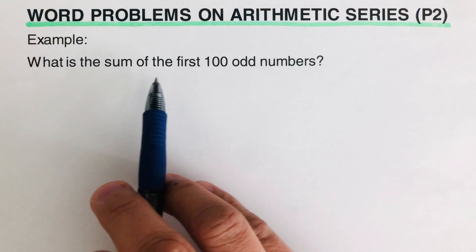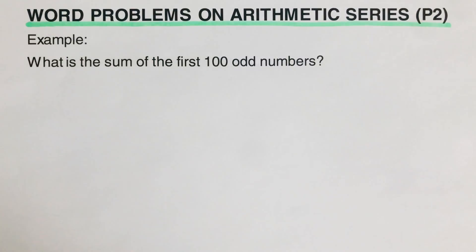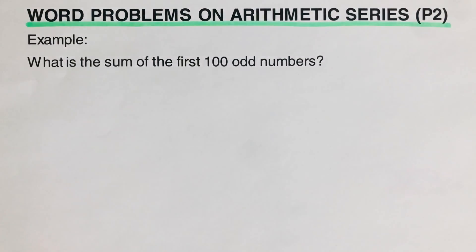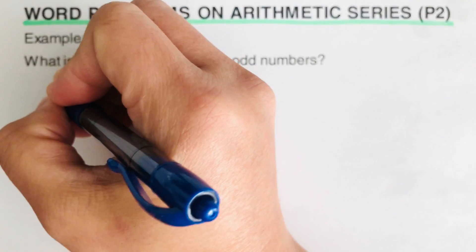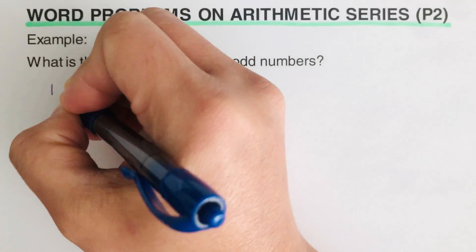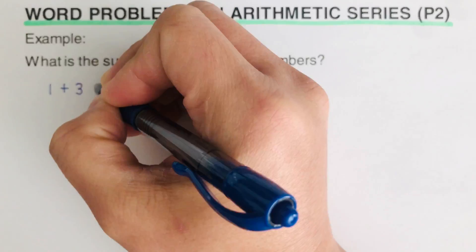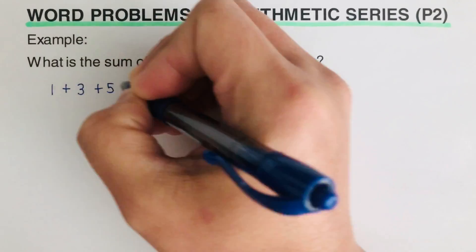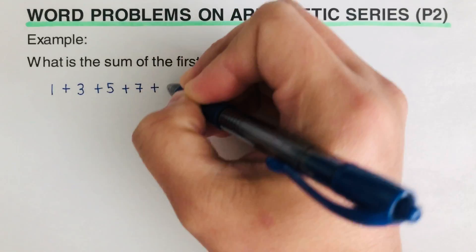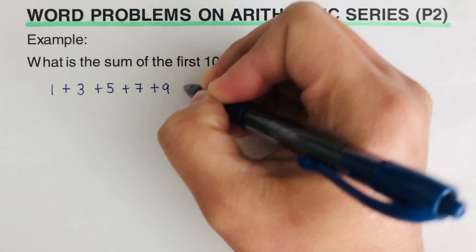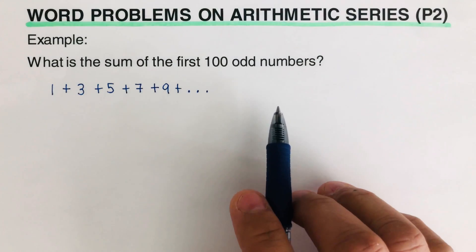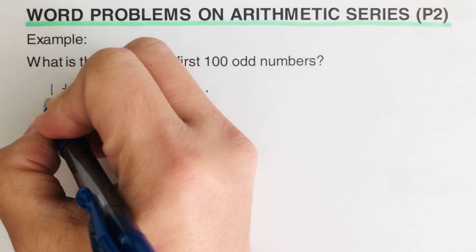Let's take this example: what is the sum of the first 100 odd numbers? In order for this problem to make sense, let's write it out. The first odd number is 1, then 3, then 5, then 7, then 9, and so on all the way to the 100th term.